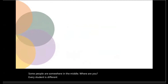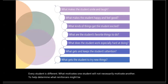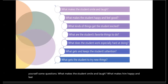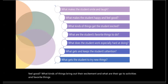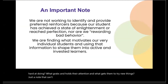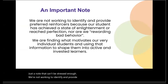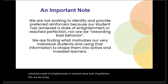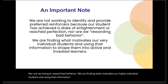Every student is different. What motivates one student will not necessarily motivate another. To help determine what reinforcers might be effective, be observant and ask yourself: What makes the student smile and laugh? What makes them happy and feel good? What brings out their excitement? What are their go-to activities and favorite things? What do you see them really applying themselves to? What grabs and holds their attention? And what gets them to try new things? We're not working to identify preferred reinforcers because our student has achieved perfection, nor are we trying to reward bad behavior — we are finding what motivates our highly individual students and using that information to shape them into active and invested learners.